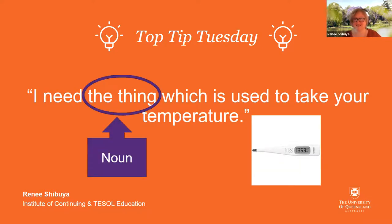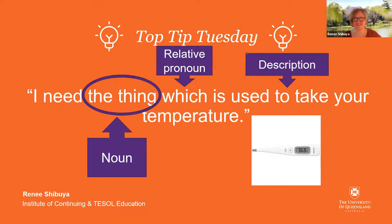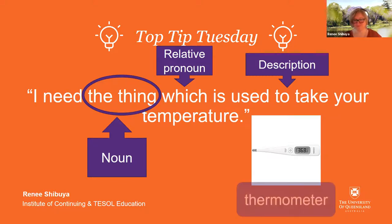The word 'thing' is the noun I chose to describe this type of word. 'Which' is the relative pronoun, and the description follows. It's a thermometer.